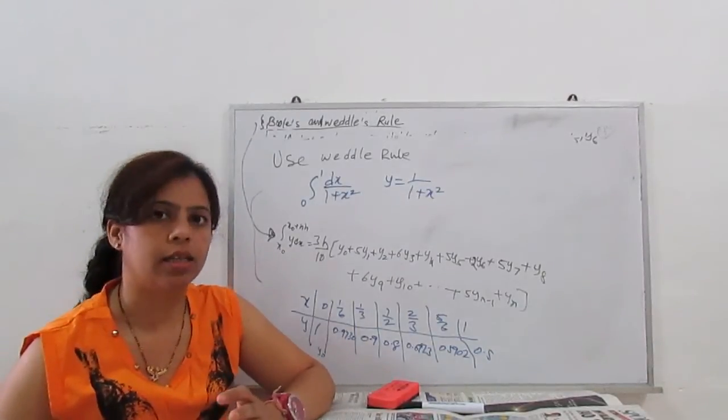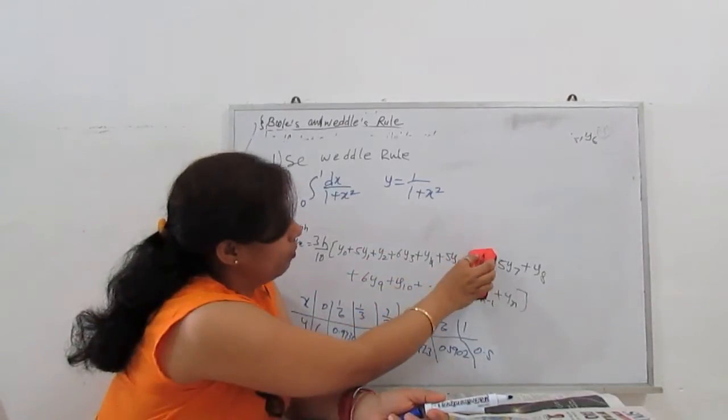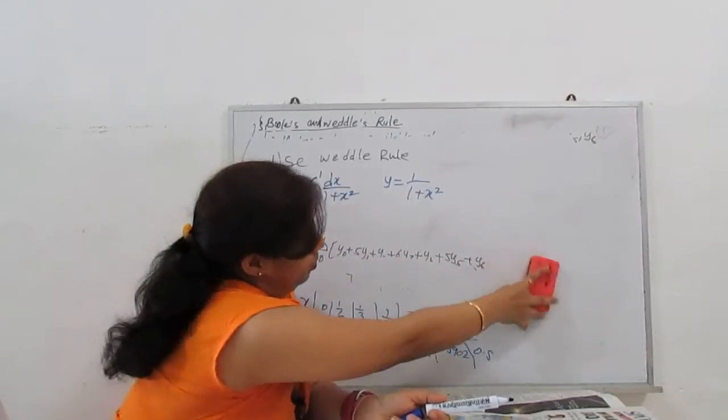Now next is nothing. We have to substitute these values in our formula. So our formula going till y6 only, so all other terms become 0.